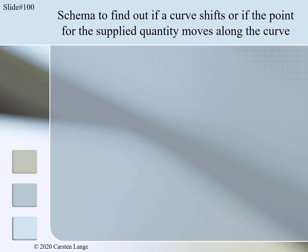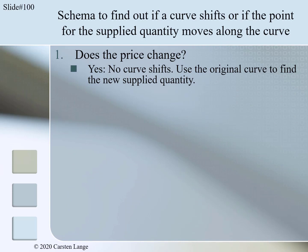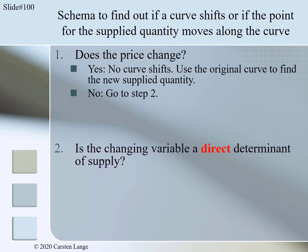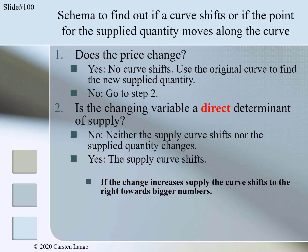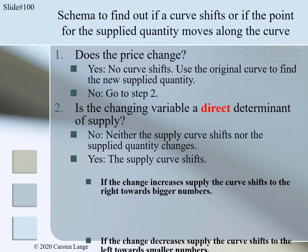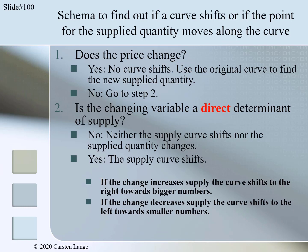Here is a more general approach to find out how a change of an economic variable is reflected in the supply market diagram. It is recommended that you use this scheme to analyze supply changes. When an economic variable changes, you start with step 1: does the price change? If yes, no curve shifts — use the original curve to find the new supplied quantity. If no, you go to step 2: is the changing variable a direct determinant of supply? If no, then neither the supply curve shifts nor the supplied quantity changes. If yes, the supply curve shifts. Then you have to find out in which direction. If the change increases supply, the curve shifts to the right towards bigger numbers. If the change decreases supply, the curve shifts to the left towards smaller numbers. Finally, you have to use the new supply curve to find the quantity supplied after the curve shifted.